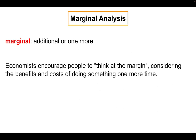Let's start with that word marginal. Marginal means additional or one more. Economists often encourage people to think at the margin, which means considering the benefits and costs of doing something one more time. Oftentimes in life, decisions aren't either/or — it's not just do I eat pizza or not. Sometimes it's a question of how much: do I eat that next slice? I've had five slices — do I eat the sixth one? That's what marginal is getting at: that razor's edge of decision making.